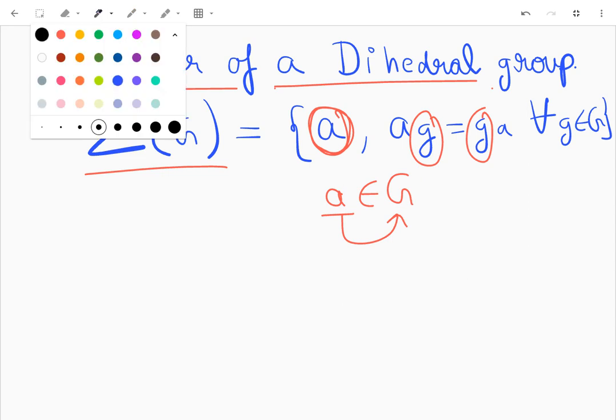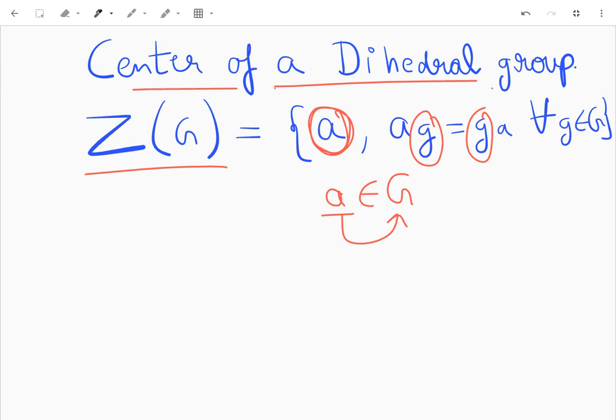So to find the center of a dihedral group, we first need to understand what kind of elements are there in the dihedral group. Let's see, G is our dihedral group of n-gons, or it can also be written D_2n - same thing, different books, don't get confused.